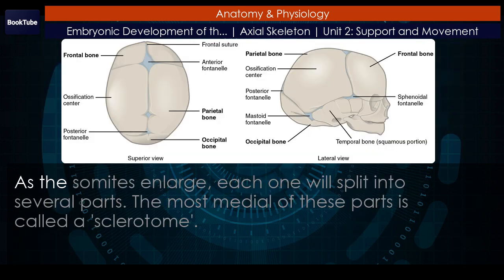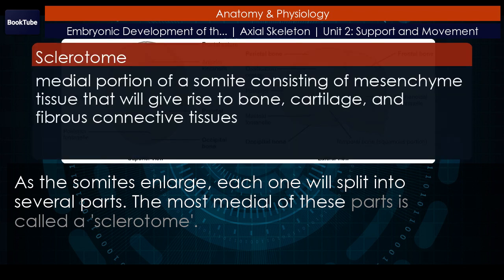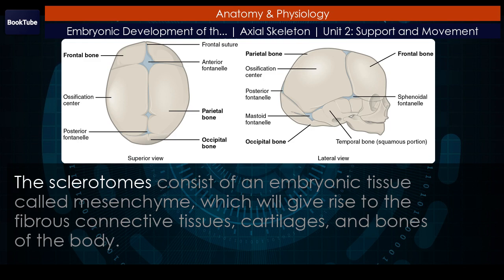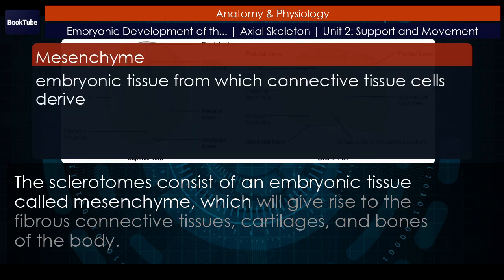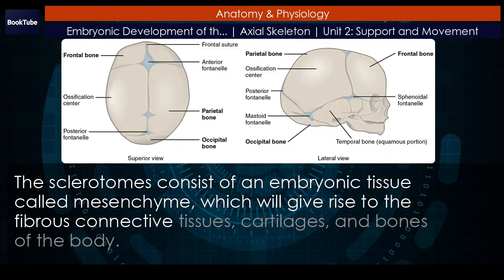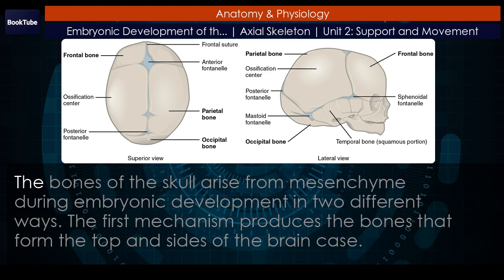As the somites enlarge, each one will split into several parts. The most medial of these parts is called a sclerotome. The sclerotomes consist of an embryonic tissue called mesenchyme, which will give rise to the fibrous connective tissues, cartilages, and bones of the body. The bones of the skull arise from mesenchyme during embryonic development in two different ways.